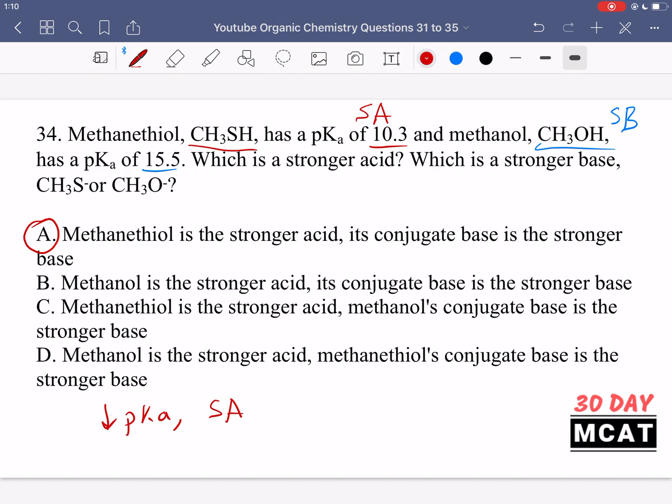Our correct answer in this question is actually A. It's saying that methanethiol is a stronger acid, which is correct, and its conjugate base is the stronger base. It's the stronger acid because it has a lower pKa compared to methanol, and because it's a stronger acid its conjugate form is going to be the stronger base.